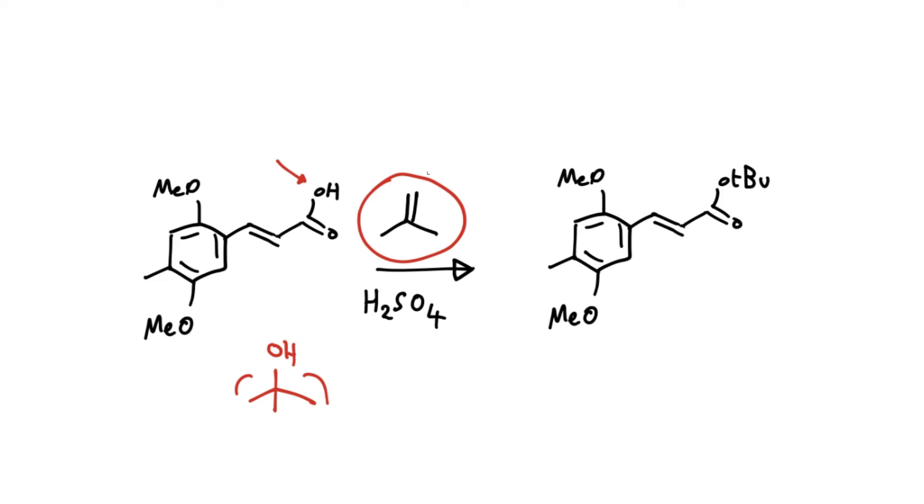Shulgin adds in his solid cinnamic acid with some sulfuric acid as the catalyst. What's happening is this is generating tert-butyl cations and carboxylates aren't normally the most nucleophilic things in the world, but the tert-butyl cation is sufficiently electrophilic that the carboxylate captures the cation,